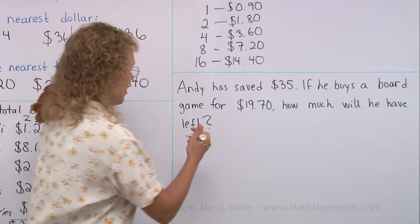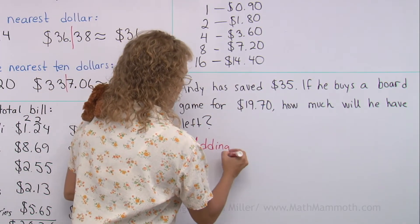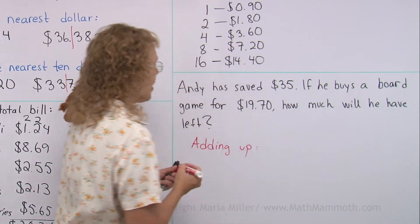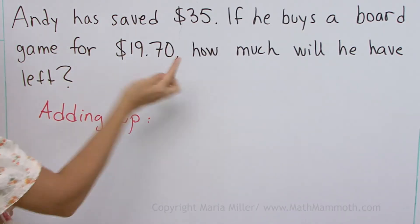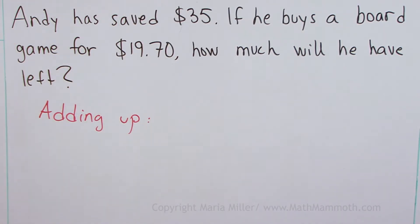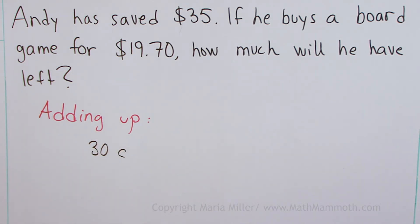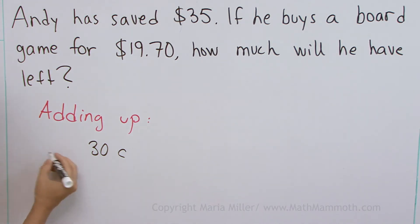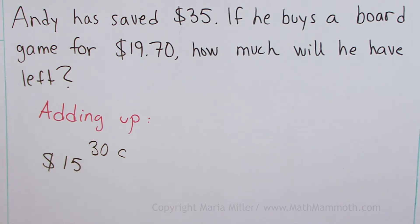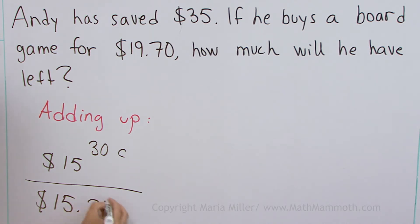Adding up: I'm at $19.70 and I add 30 cents, which brings me to $20. And then from $20 to $35 is simply $15. If you add these together, you get $15.30.